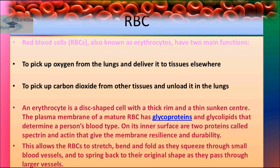Each RBC is circular or disc-shaped — like a donut — which is biconcave, with a diameter of about 7 micrometers and thickness of about 2.5 micrometers. RBCs remain in circulation for about 100 to 120 days. Worn-out RBCs are destroyed in the spleen and liver by phagocytosis. The spleen is also known as the graveyard of RBCs.